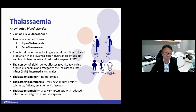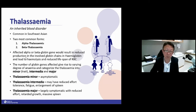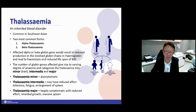Next is thalassemia — quite common in this region of Southeast Asia. Most of you should have heard of alpha or beta thalassemia, and some of you may actually have this condition. These are due to a genetic problem inherited from parents. Hemoglobin has different globin chains — beta chain and alpha chain. When you have a beta gene problem, you produce an abnormal beta chain, and vice versa. Thalassemia is categorized into minor, intermediate, or major depending on severity of anemia.